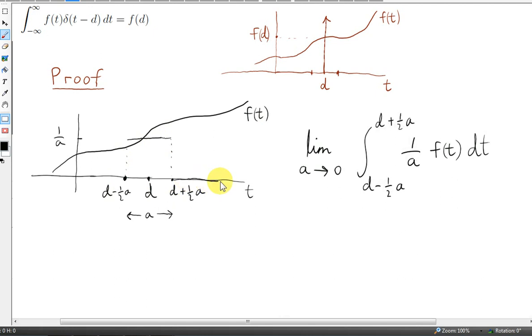For values of t greater than d plus a half, the rectangular function is zero. So we have zero times f(t) here. And we have it here as well, zero times f(t). But in here, if we multiply the functions, we get 1 over a times f(t). That's for this interval here. So that's what we have here.